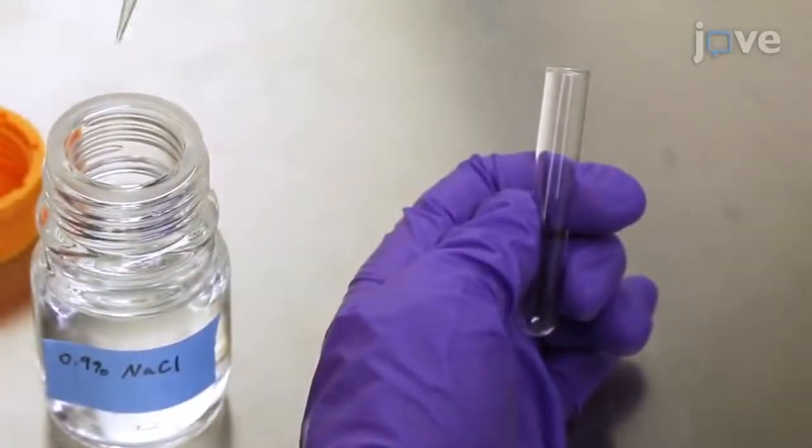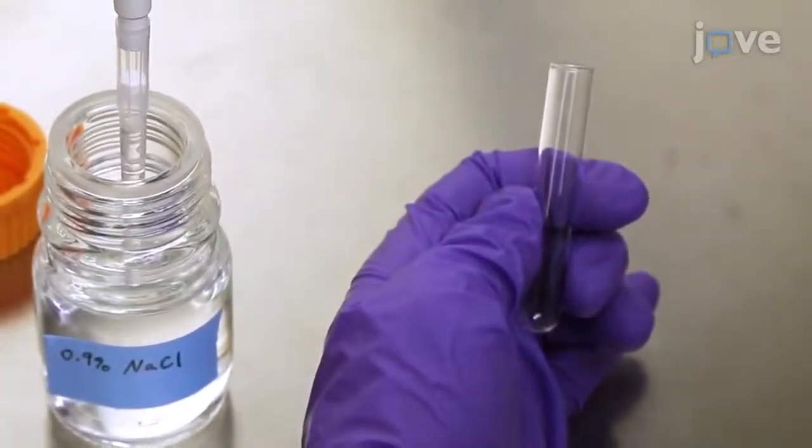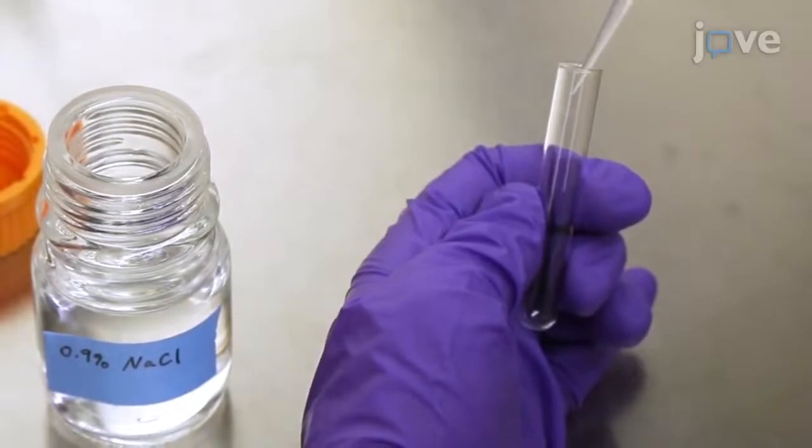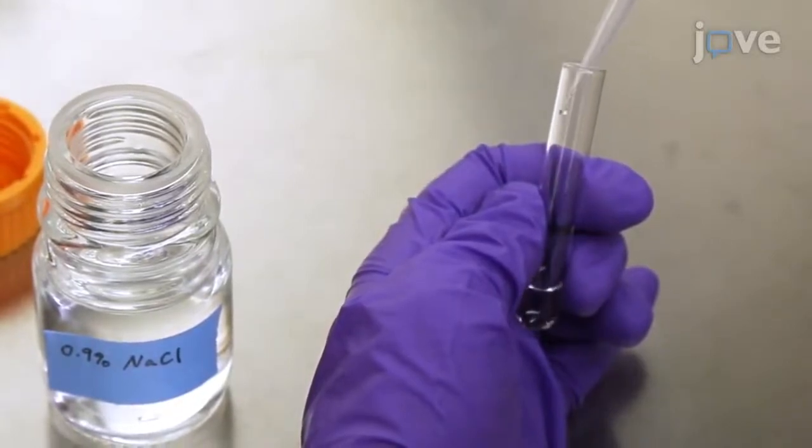Next, add about 1 milliliter of 0.9% sodium chloride saline to 12 mm by 75 mm round-bottom glass culture tubes.